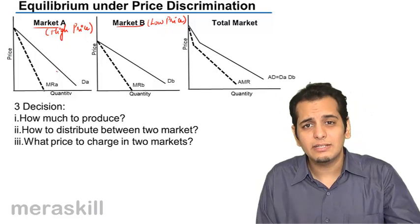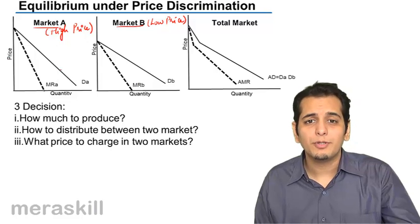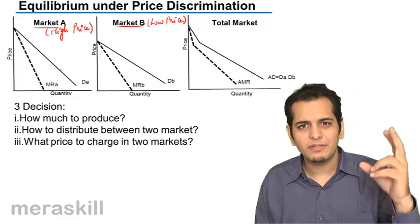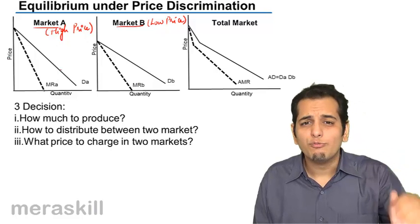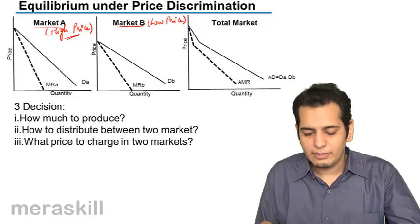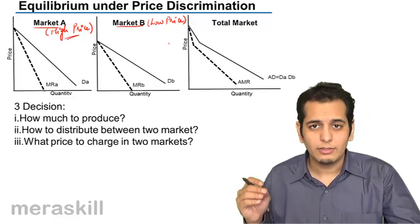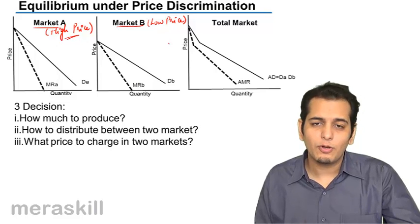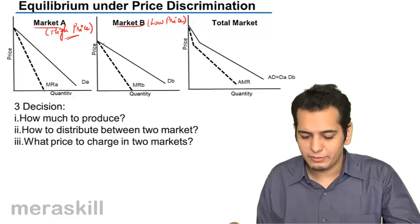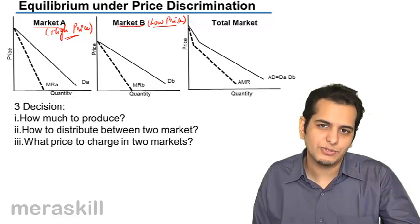When the demand is inelastic, the monopolist would try to charge customers a higher price, because a change in price will not bring a bigger change in demand. So even if he raises his prices, demand won't fall much. But where demand is elastic, he will not raise the price much, because a slight change in price will bring a higher change in demand. So market A becomes the high price market and market B becomes the low price market because of the elasticities of demand.